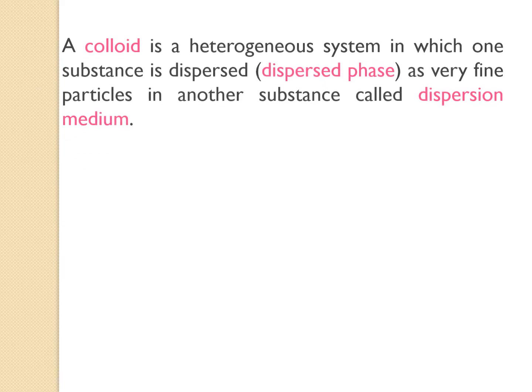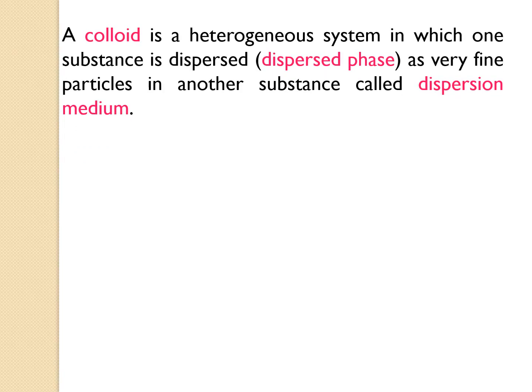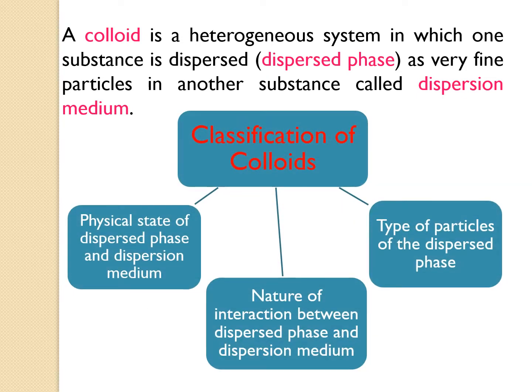What actually is a colloid? A colloid is a homogeneous system in which one substance — known as the dispersed phase — is dispersed as very fine particles in another substance called the dispersion medium. Colloids are classified in three categories: on the basis of (1) physical state of dispersed phase and dispersion medium, (2) nature of interaction between dispersed phase and dispersion medium, and (3) types of particles of the dispersed phase.